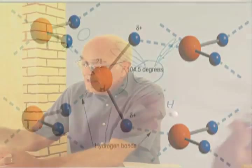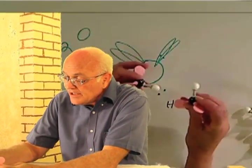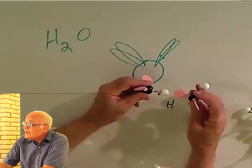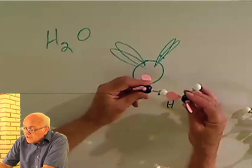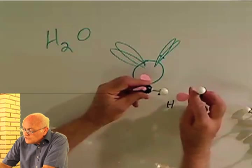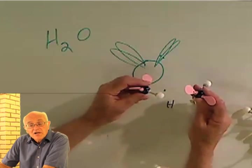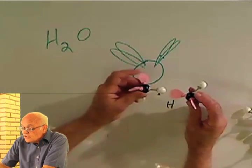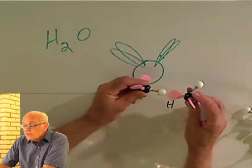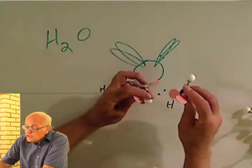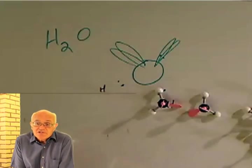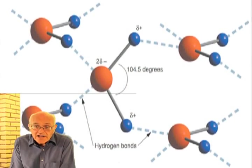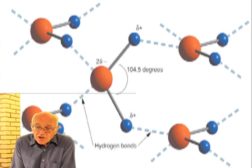The hydrogen bond works like this. The hydrogen, this is the hydrogen, the hydrogen interacts with the clouds, with the two clouds. And there are two of them. So that every oxygen molecule can interact with two through its hydrogen and two through its clouds. And the result of all this is that a water molecule can have a weak interaction with four other water molecules.